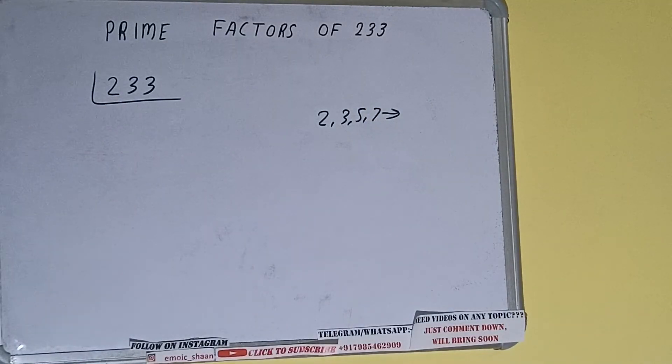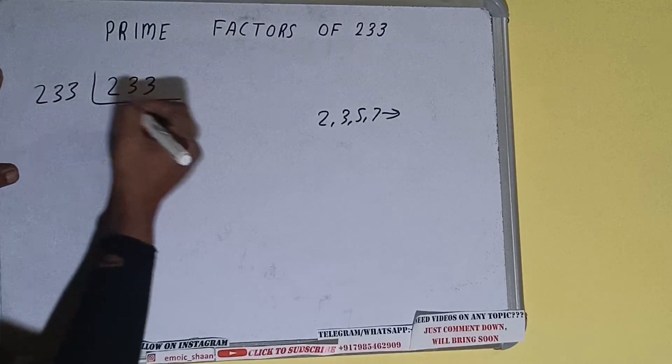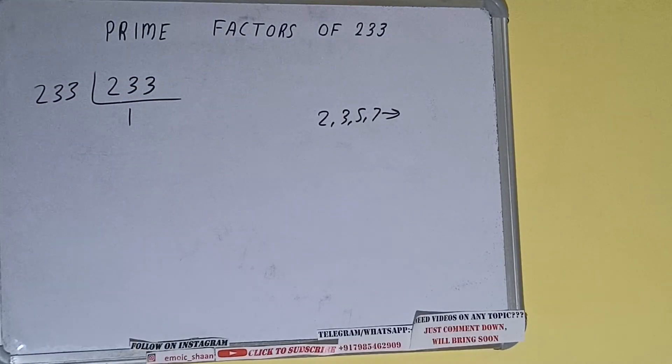If we talk about the number 233, the number 233 is also a prime number. So it is only divisible by itself, that is 233, and one. Once we do so, we'll be getting one. Once we get one, we need to stop.